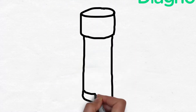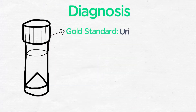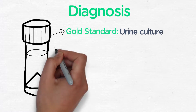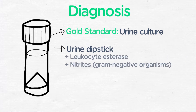The gold standard for diagnosis of UTI and acute pyelonephritis is a urine culture. On initial laboratory evaluation, a urine dipstick will demonstrate a positive leukocyte esterase, or in the presence of gram-negative organisms, positive nitrites.